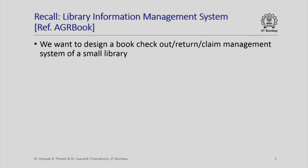Now if you recall from the last lecture, we were trying to design a simple library information management system, which was motivated by the discussion in the AGR book. The simple information management system was supposed to keep track of books checked out by patrons in the library, books returned by patrons, and books claimed by patrons.